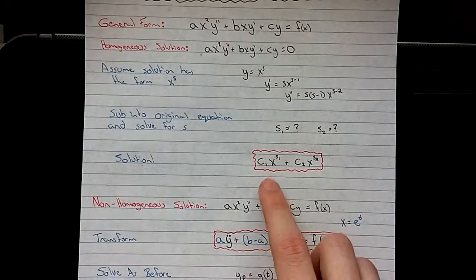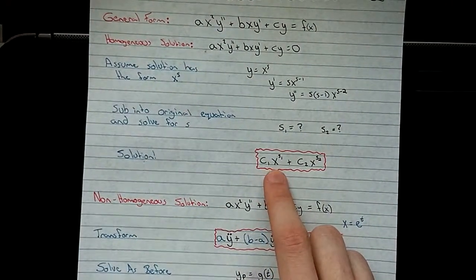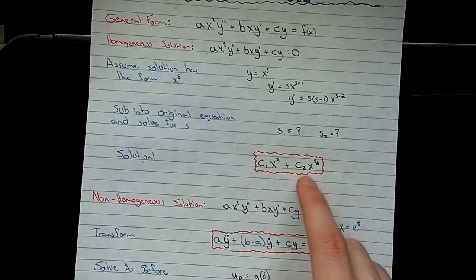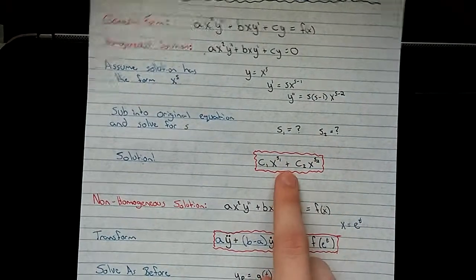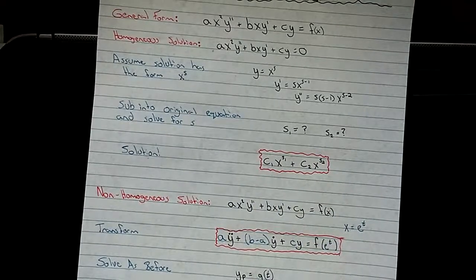So then your solution looks like this: c1 x to the power of s1 plus c2 x to the power of s2. And that's your two homogeneous solutions right there.